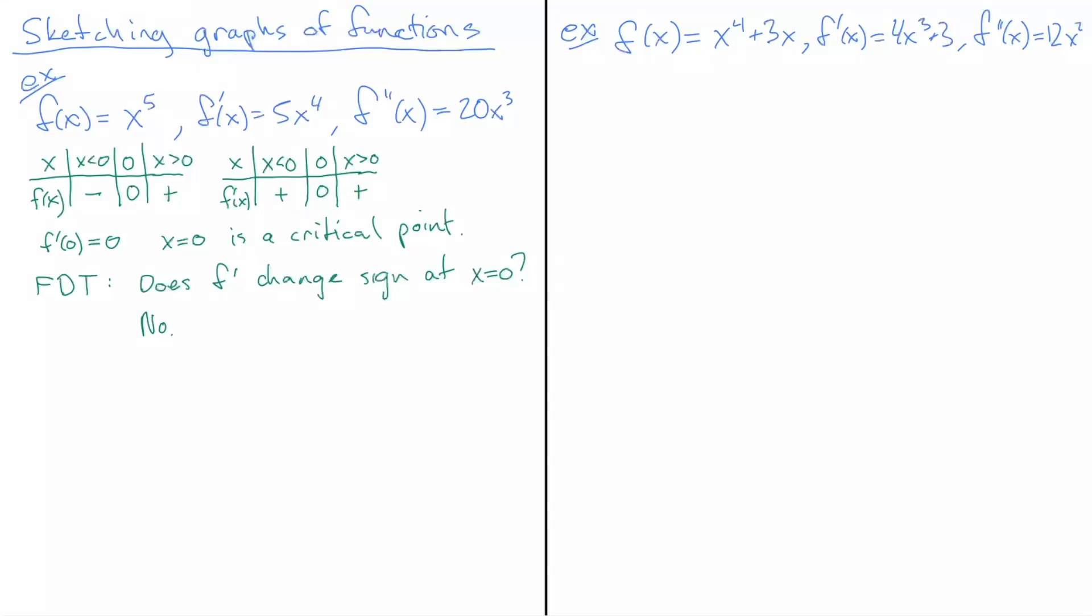If we have a flat spot, we'd have a min if the slope was negative before and positive after—that's a change of sign. We'd have a max if it was positive before and negative after. What we have instead is a positive slope before and after, which does not give us a min or a max. This is called an inflection point.